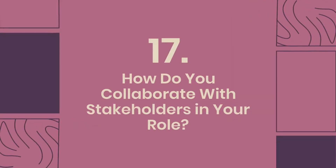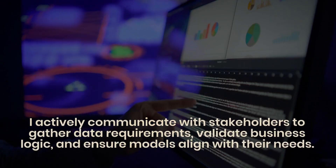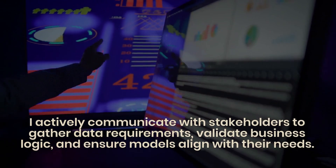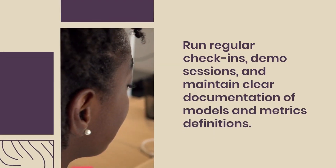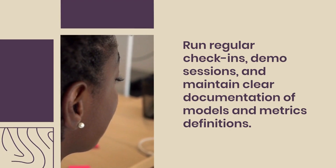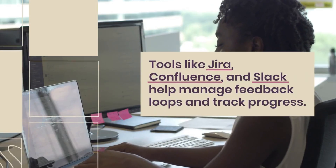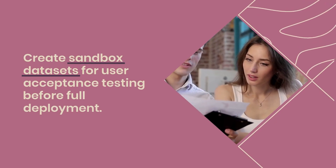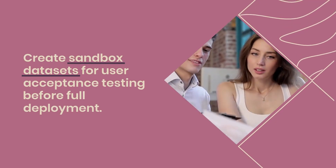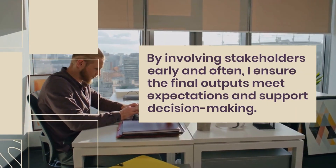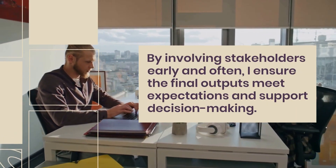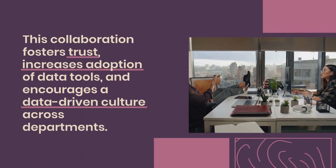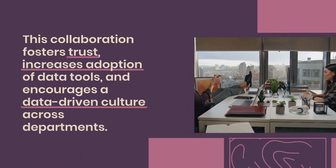Question 17: How do you collaborate with stakeholders in your role? I actively communicate with stakeholders to gather data requirements, validate business logic, and ensure models align with their needs. I run regular check-ins, demo sessions, and maintain clear documentation of models and metrics definitions. Tools like Jira, Confluence, and Slack help manage feedback loops and track progress. I also create sandbox datasets for user acceptance testing before full deployment. By involving stakeholders early and often, I ensure the final outputs meet expectations and support decision-making. This collaboration fosters trust, increases adoption of data tools, and encourages a data-driven culture across departments. My goal is always shared understanding and actionable insights.